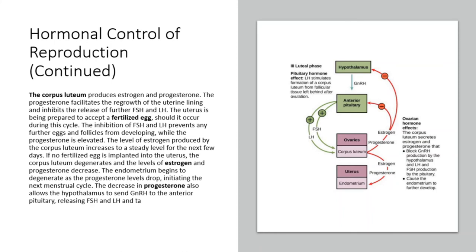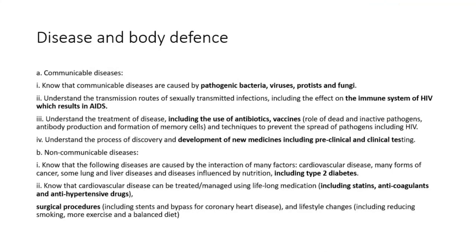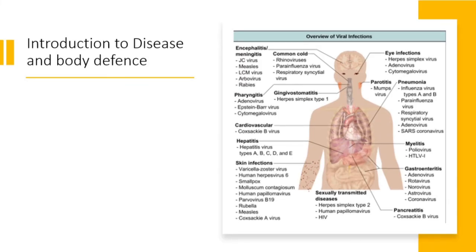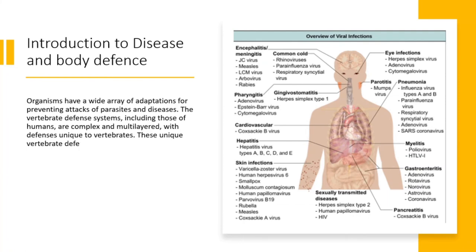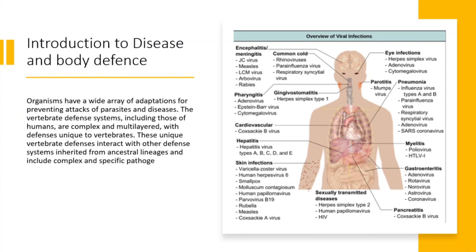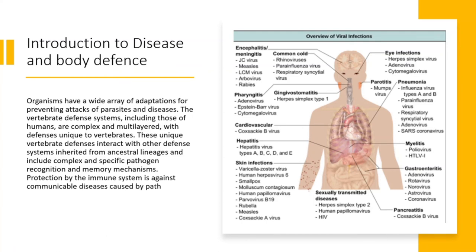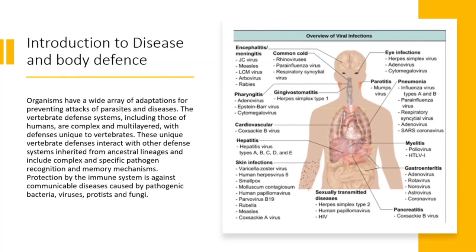The decrease in progesterone also allows the hypothalamus to send GnRH to the anterior pituitary, releasing FSH and LH and starting the cycles again. Introduction to Disease and Body Defense. Organisms have a wide array of adaptations for preventing attacks of parasites and diseases. The vertebrate defense systems, including those of humans, are complex and multilayered, with defenses unique to vertebrates. These unique vertebrate defenses interact with other defense systems and include complex, specific pathogen recognition and memory mechanisms. Protection by the immune system is against communicable diseases caused by pathogenic bacteria, viruses, protists, and fungi.